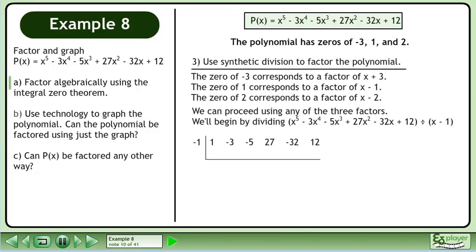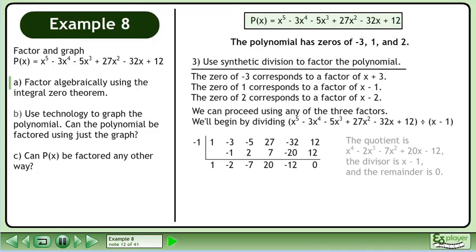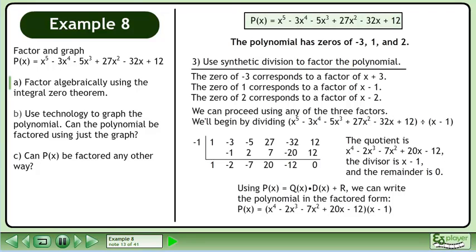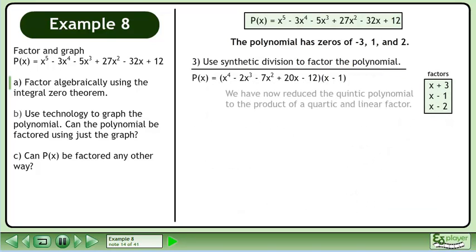Prepare and complete the synthetic division. The quotient is x⁴ - 2x³ - 7x² + 20x - 12, the divisor is (x - 1), and the remainder is 0. Using p(x) = q(x) · d(x) + r, we can write the polynomial in factored form: p(x) = (x⁴ - 2x³ - 7x² + 20x - 12)(x - 1). We have now reduced the quintic polynomial to the product of a quartic and linear factor.